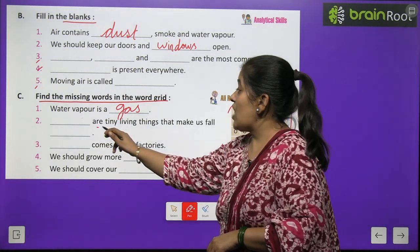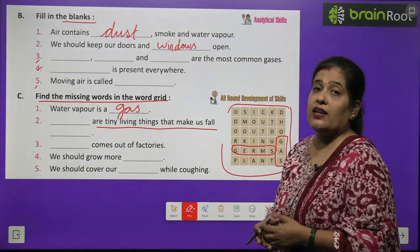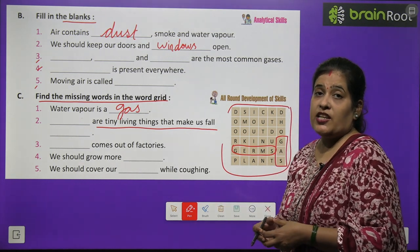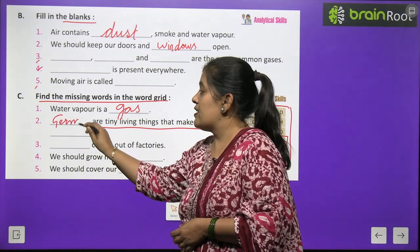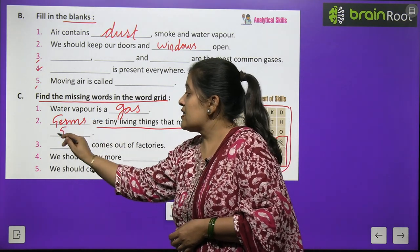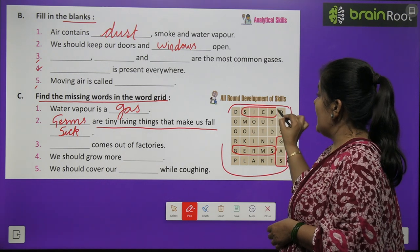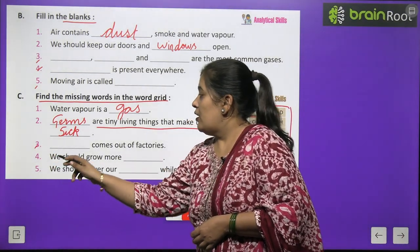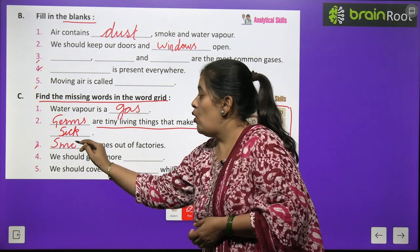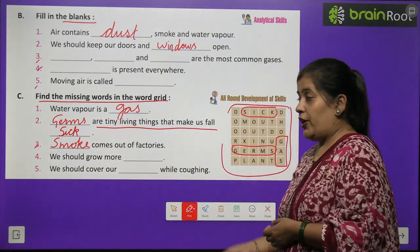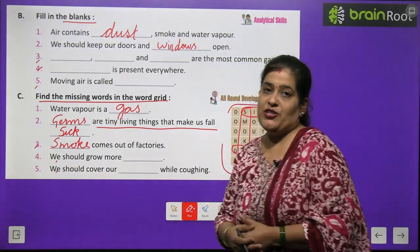Number two: germs are tiny living things that make us sick — find 'germs' and 'sick' in the grid. Number three: smoke comes out of factories — find 'smoke' in the grid. Numbers four and five you will do by yourself.